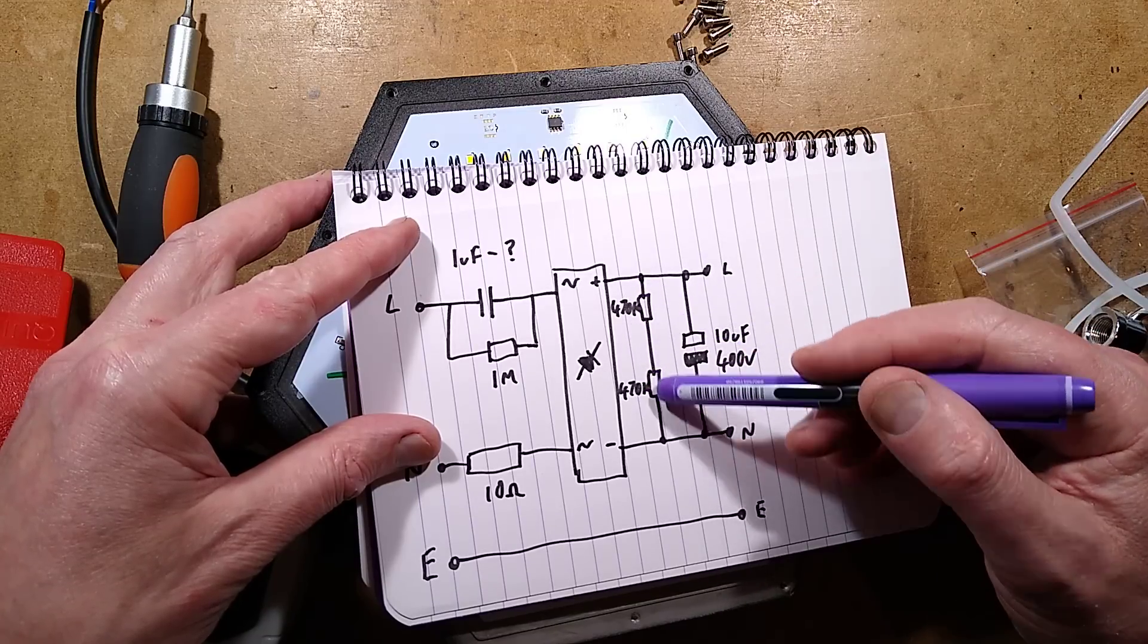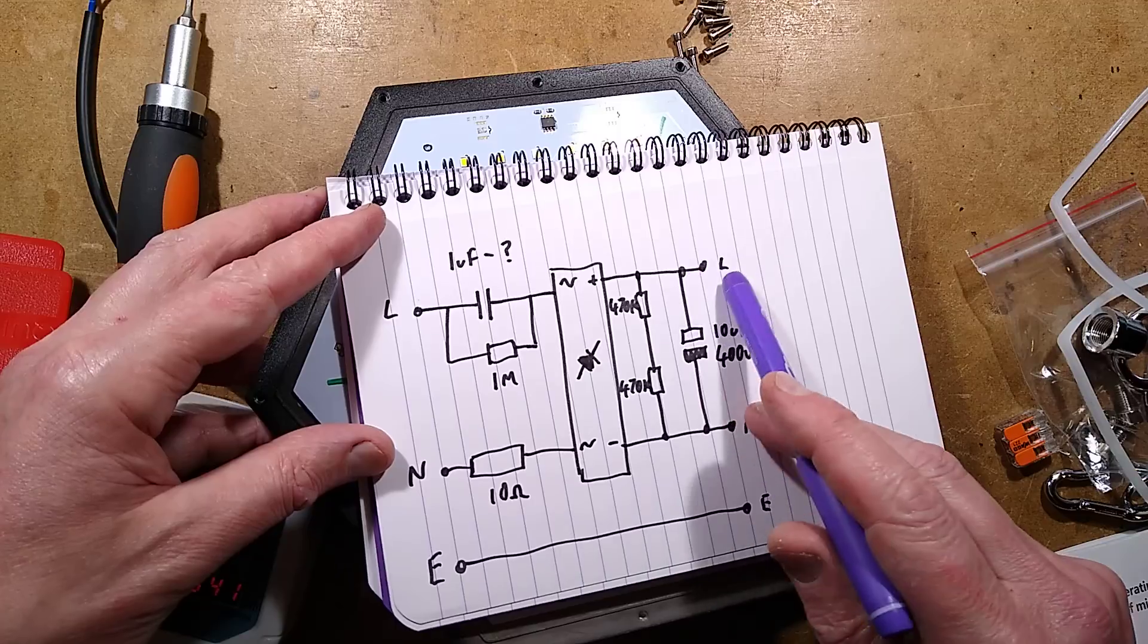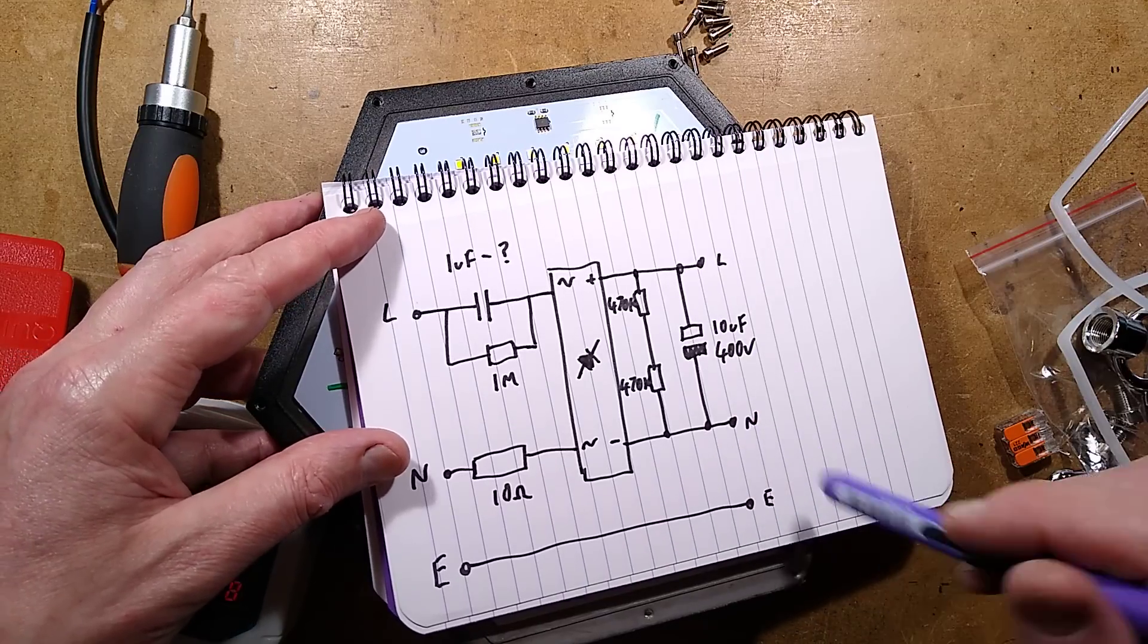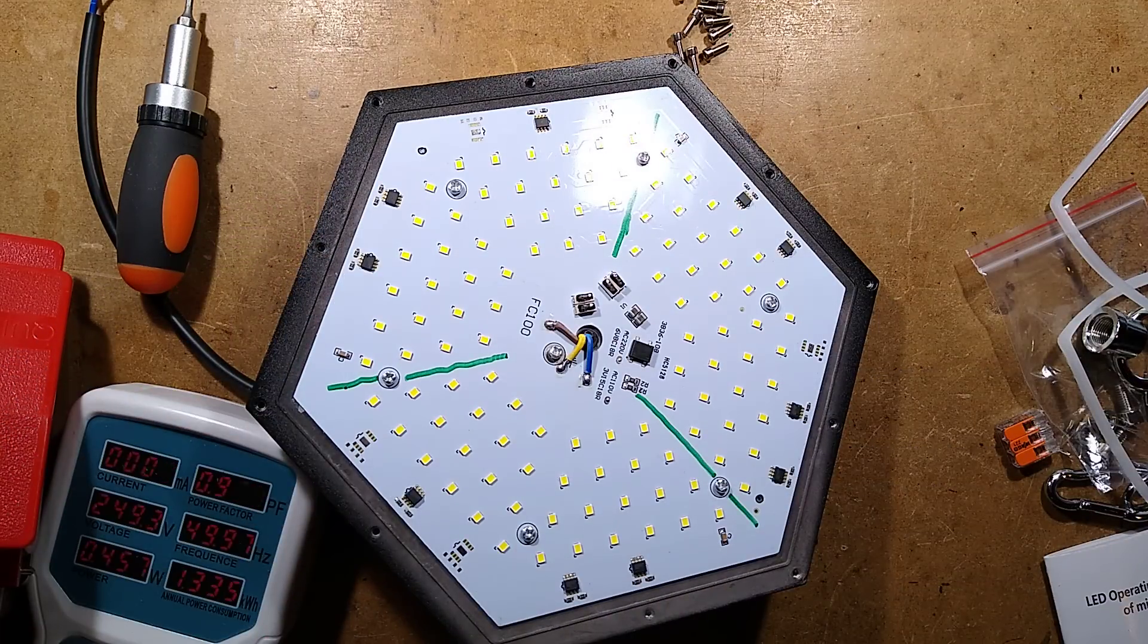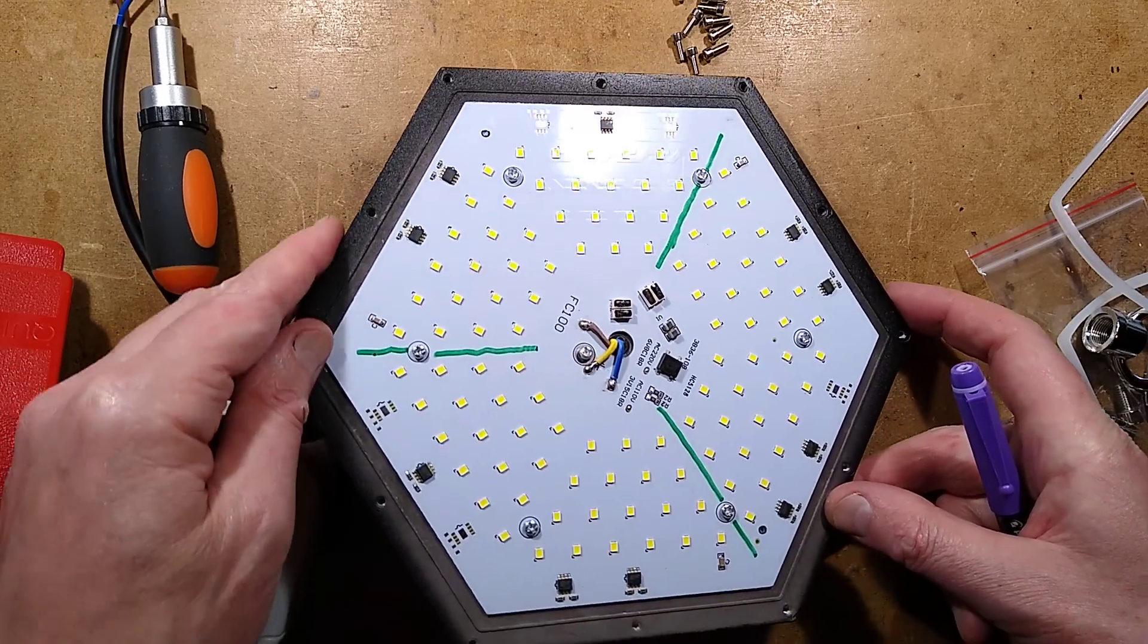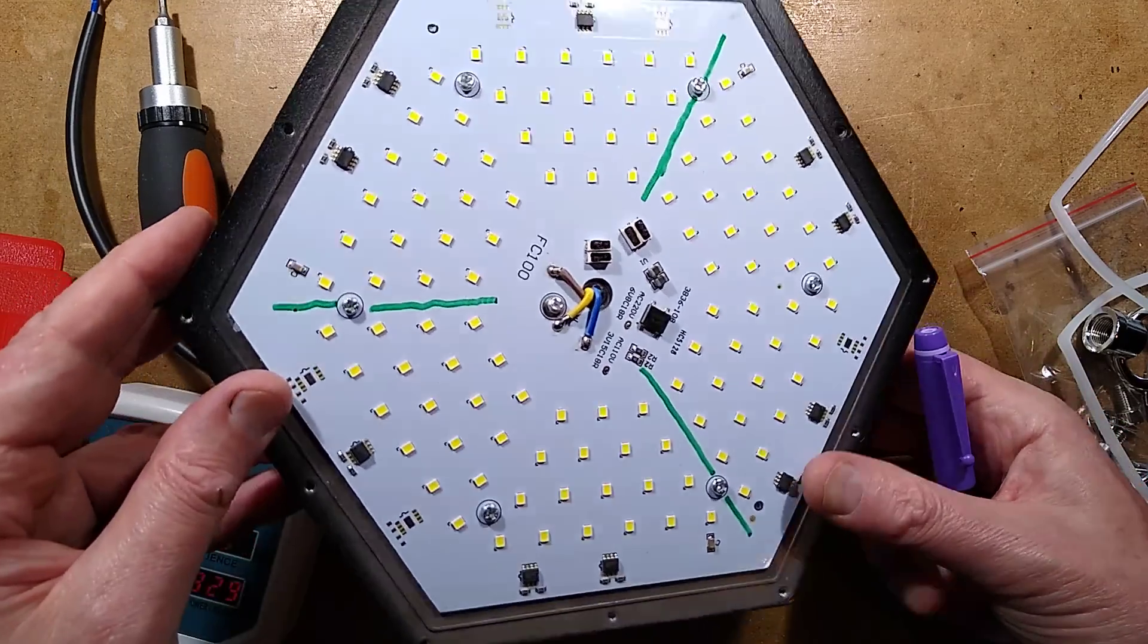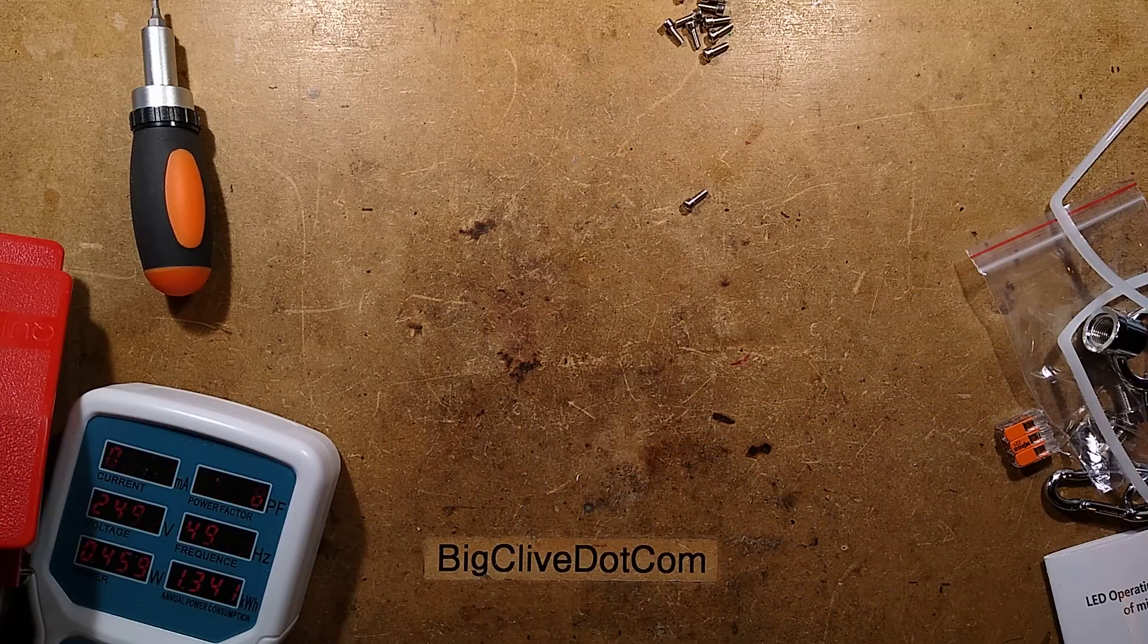Bridge rectifier, a smoothing capacitor could be 10 microfarad, it could be higher, with 470k discharge resistors, two in series across that to discharge it. And all you do is basically connect that to the live and neutral in, and that would effectively current regulator limit the power of the lamp and also stop it flickering. But whether you'd want to go to all that hassle is debatable. Now, if I bring in the big daddy one. Have I covered everything? I think I have.